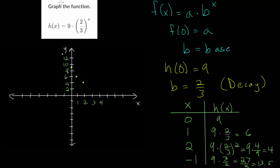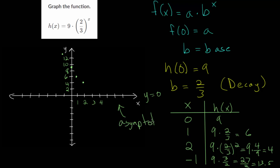All exponential functions, whether growth or decay, have an asymptote. Since we're not adding or subtracting a constant — in other words, not shifting the function up or down — the asymptote for all of these is the line y = 0, the x-axis. Let me connect these points and draw in the exponential curve.